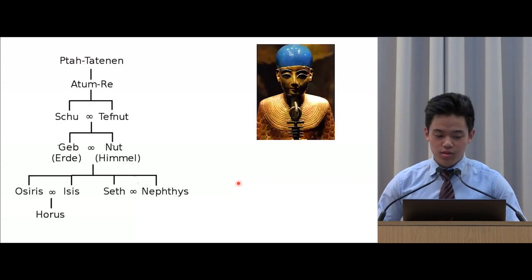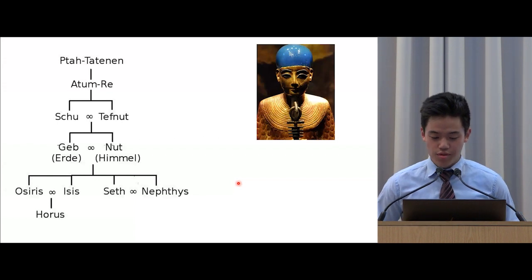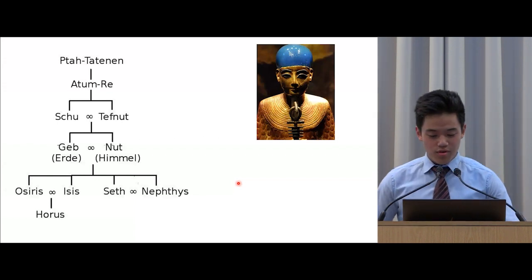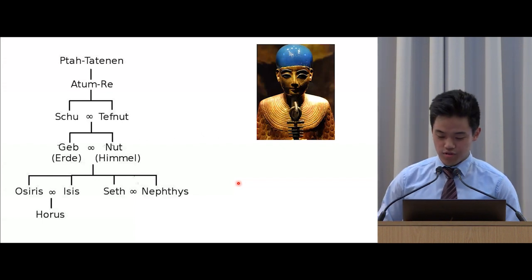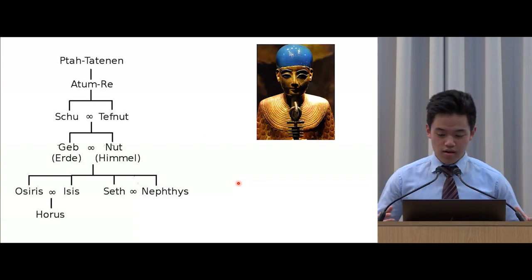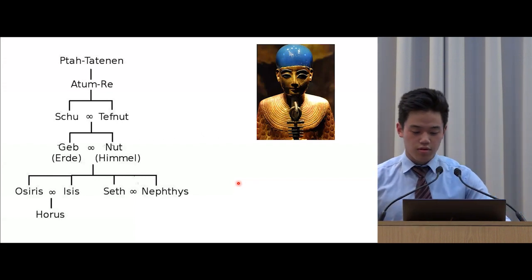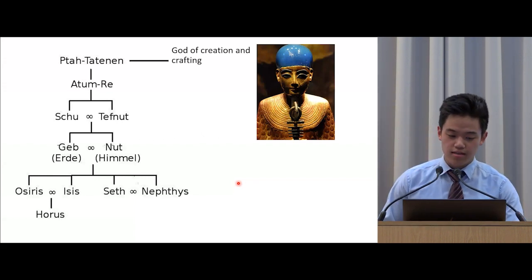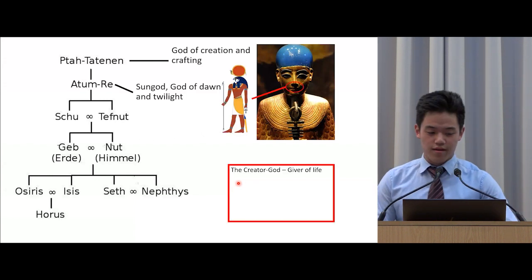Egyptian history started with the god Ptah. Ptah was the first existing god of Egypt — from him all the names of Egypt came and all the gods were created. Ptah is the god of creation and crafting; he is the creator god and the giver of life.